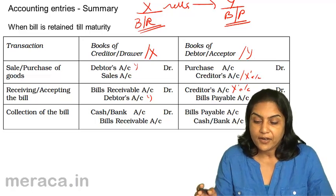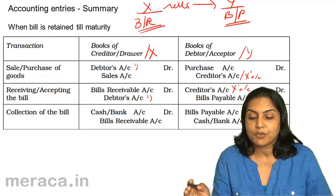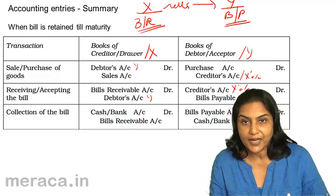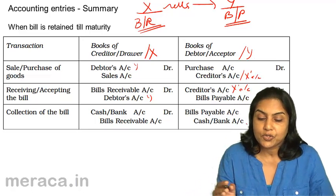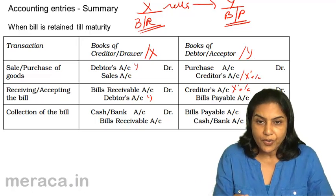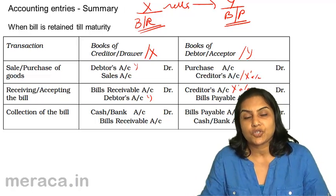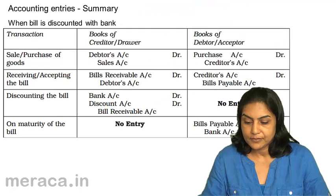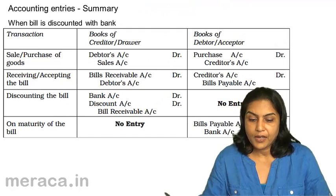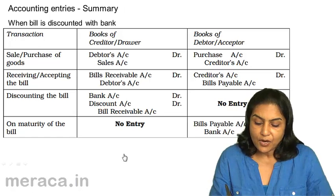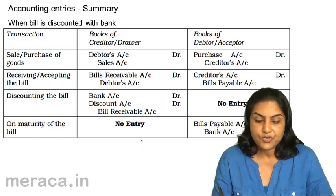We have now compared the entries in the books of X and in the books of Y — in the books of the creditor and the debtor, the seller and the buyer, the drawer and the acceptor. Next, when the bill is discounted with the bank, what would be the entries?